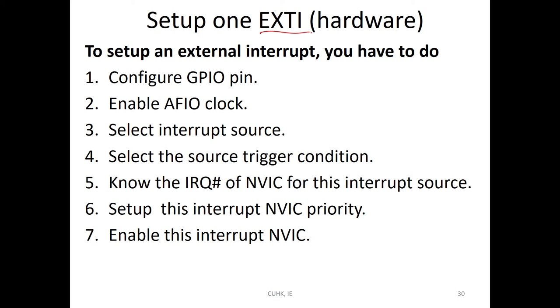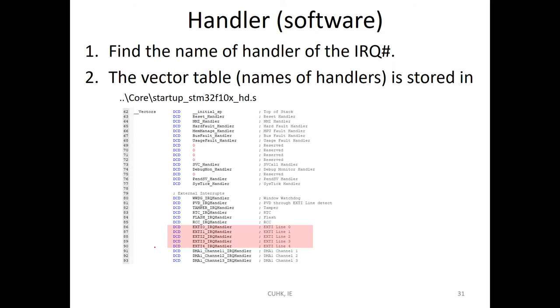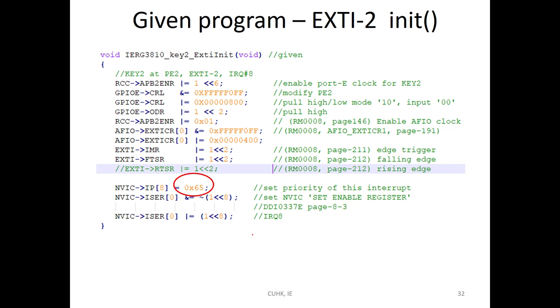Each external interrupt, you have to config the GPIO pin, enable, set the interrupt trigger condition, check the IRQ. The name of the handler is defined in this file, so you can check the handler name in our program.